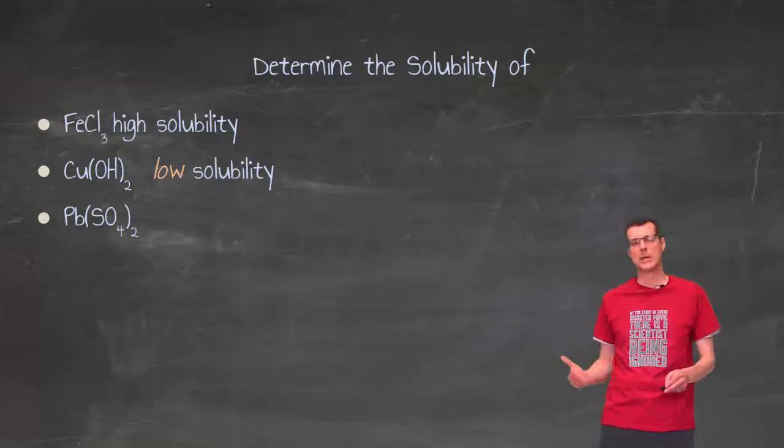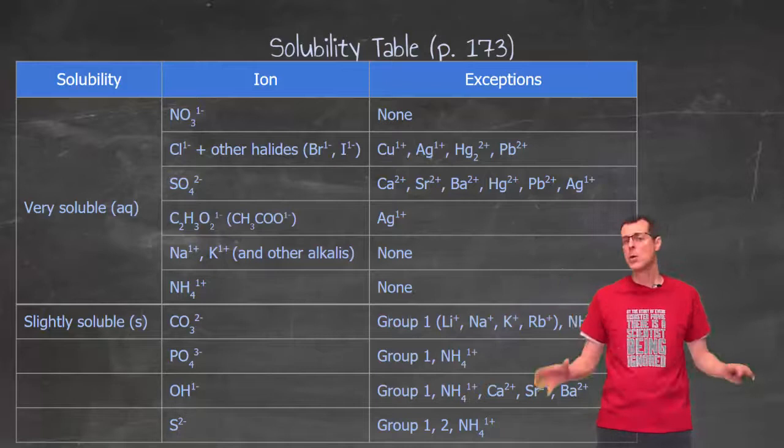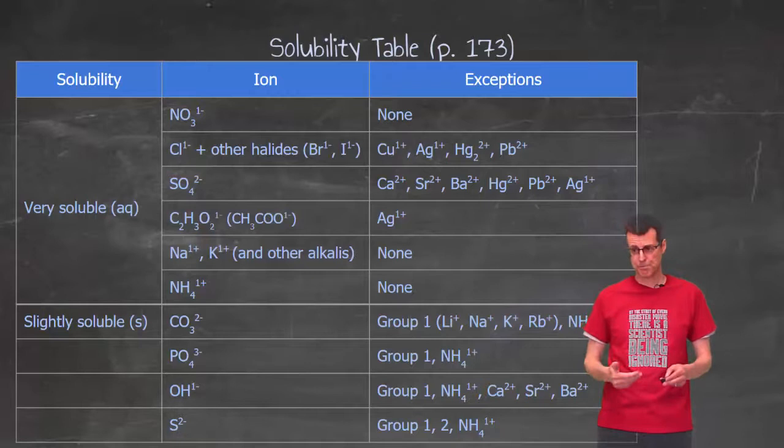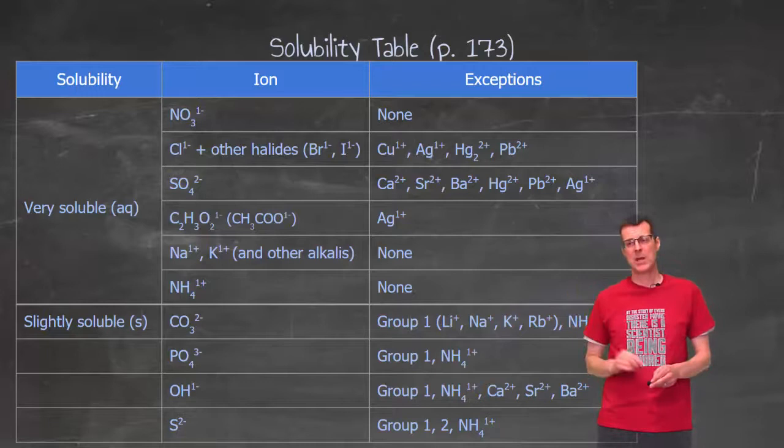Doing the same thing again for Pb(SO4)2. Same thing. Go to the table. I find SO4. It's near the top again. So most of those are very soluble. And now I'm looking for Pb in there. Now, I do see a Pb, but if I look carefully, SO4 says it's a minus 2 ion, and the Pb that I'm working with has two of those.